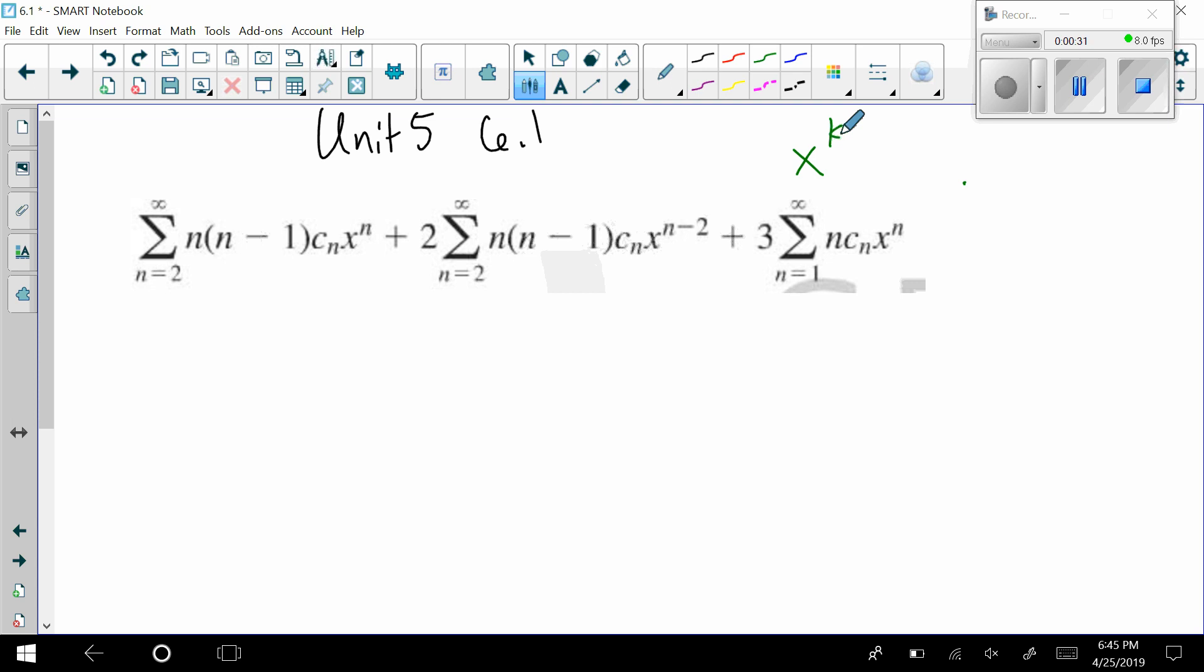So as we look at this, of course we see some issues. We have this x to the n power, we have this x to the n minus 2, then we have x to the n here. So for each one of them, we're going to set up what we want. So here this is actually very straightforward, n can equal k.